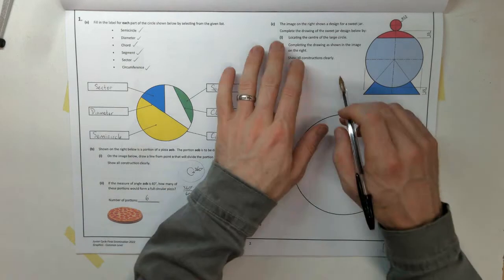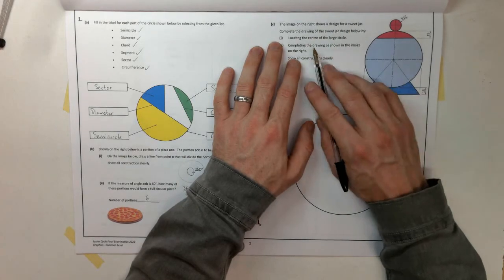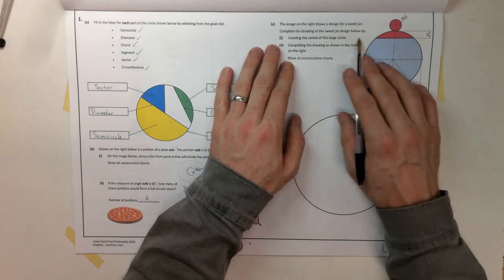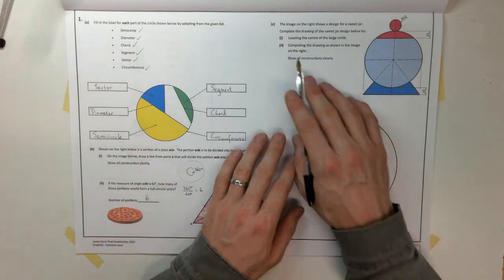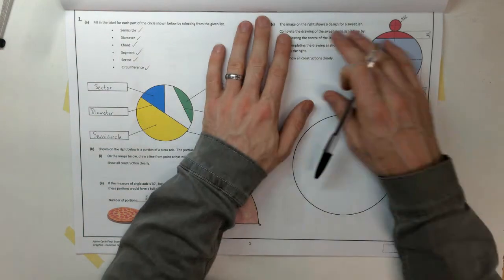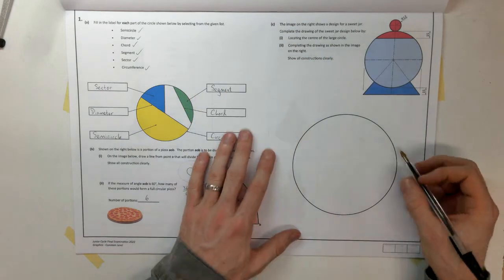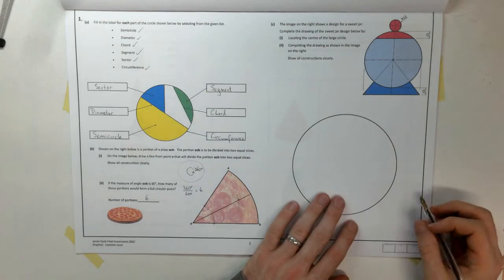On to part C, then. The image on the right shows the design for a sweet jar. Complete the drawing of the sweet jar designed below. They're telling us each step that we're going to have to follow. So we want to locate the centre of the large circle. Here's a circle, but they want us to locate the centre of that.